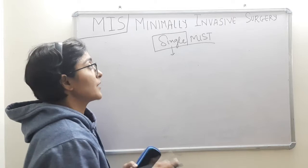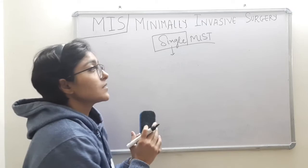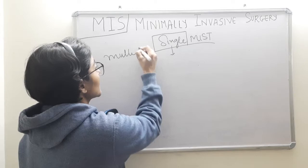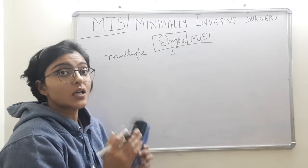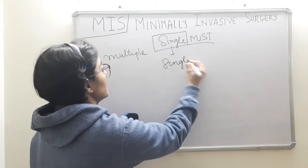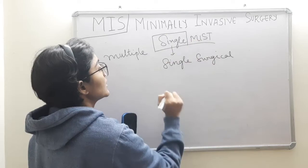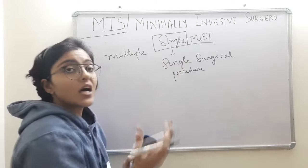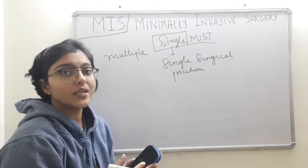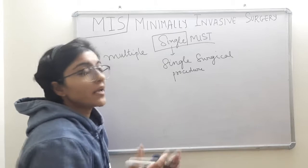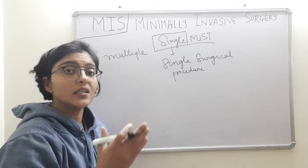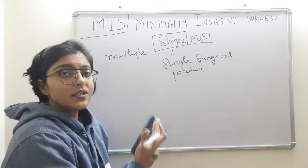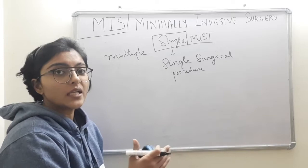The second important point to clarify is the context of using the word 'single.' Here, the word 'single' is used because multiple defects are accessed, approached, and treated in a single surgical attempt. This is the context. In a single surgical procedure, multiple defects are treated altogether. That means these defects have to be located adjacent to each other in a consecutive fashion. This Single MIST procedure has an indication of multiple defects located adjacent to each other.